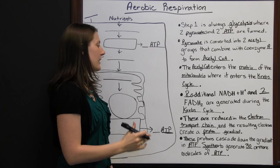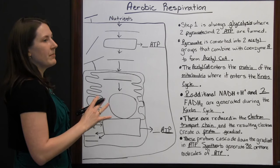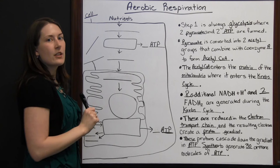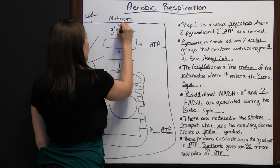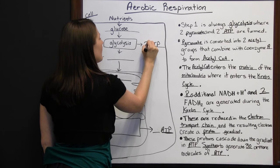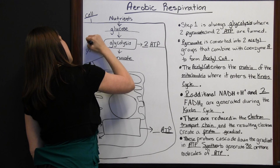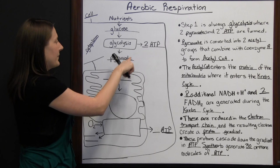Looking at this in a diagram: nutrients taken into the cell provide glucose. From one molecule of glucose, glycolysis produces two ATP and pyruvate — this all happens in the cytoplasm. The pyruvate then goes into the mitochondria.